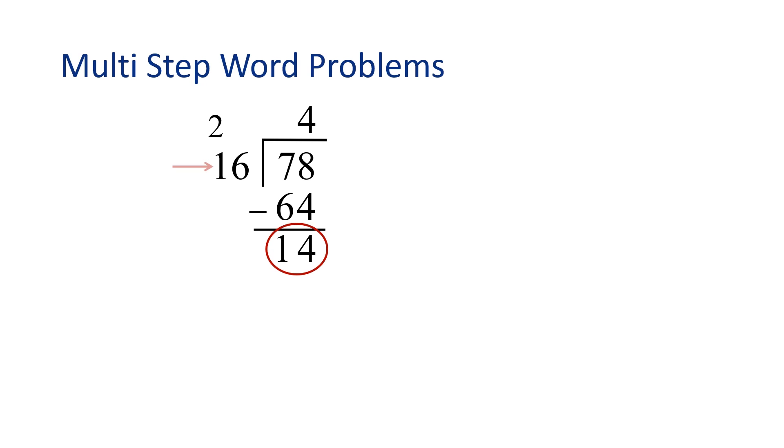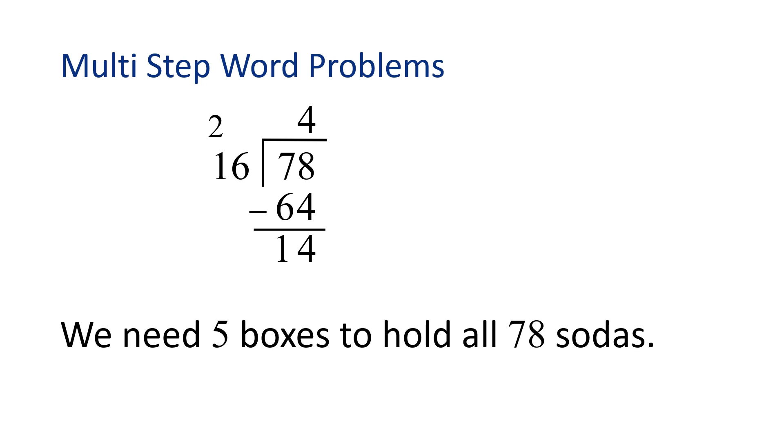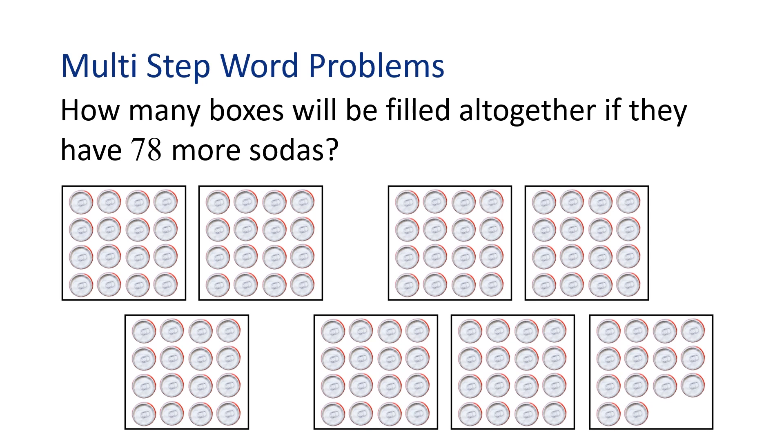And since 14 is less than our divisor, 16, we're done with the long division. And we know that we have a remainder of 14 sodas. So what does our answer really mean? We need 4 boxes to hold 64 sodas, plus 1 more box to hold 14 remaining sodas. In other words, we need 5 boxes to hold all 78 sodas. Let's revisit the problem, though. The factory started with 3 boxes and needed to add more for the 78 sodas. We just found out that we needed 5 boxes to hold the 78 sodas. Therefore, altogether, we need 3 plus 5 equals 8 boxes total to hold all the sodas. Nice work!